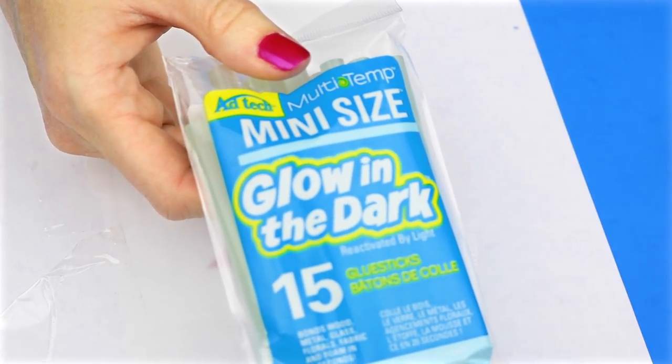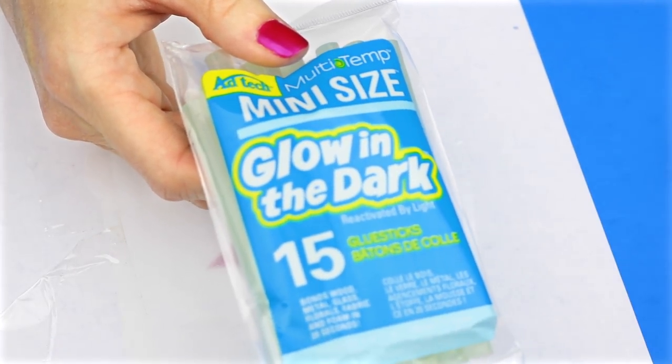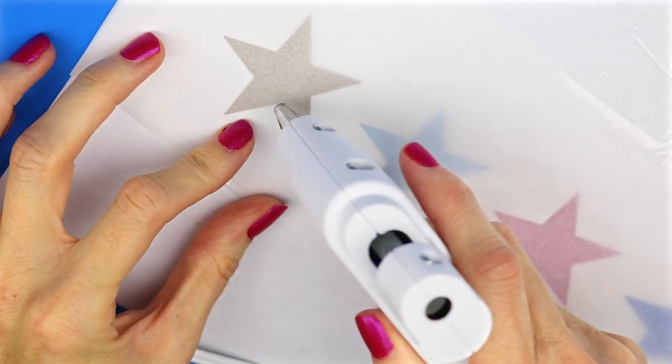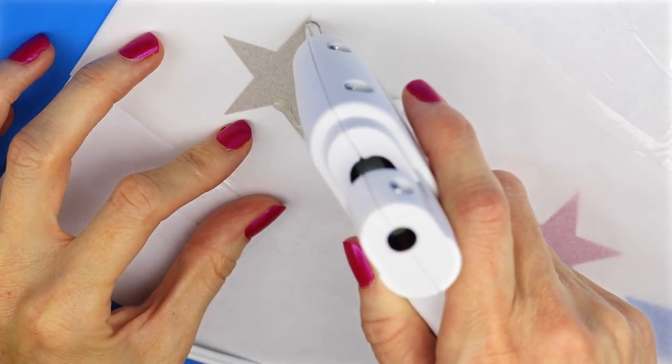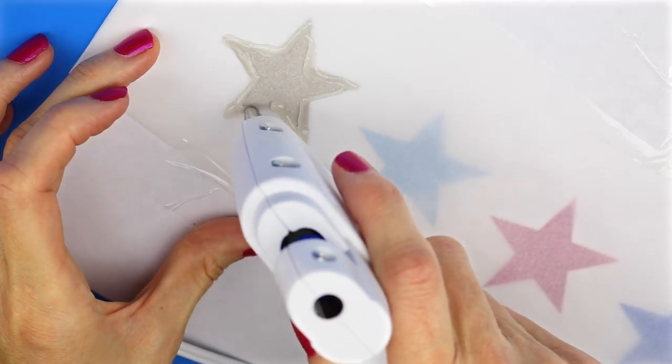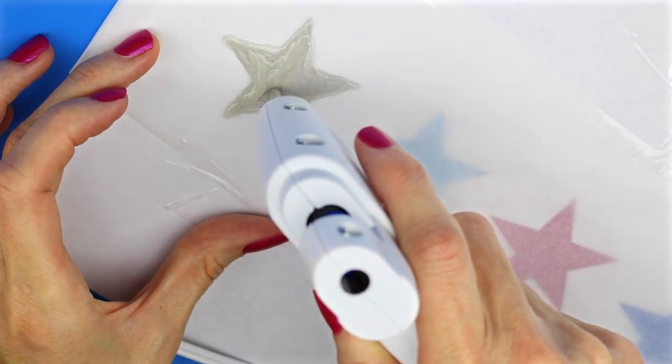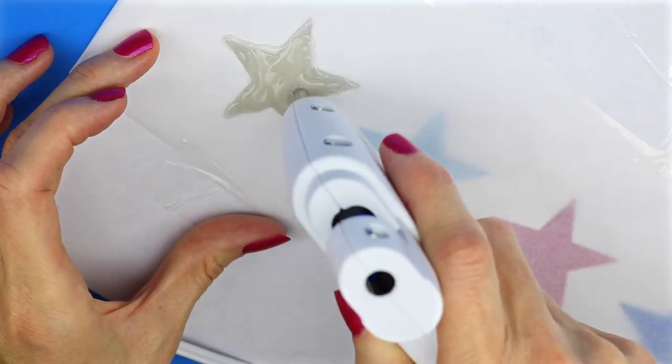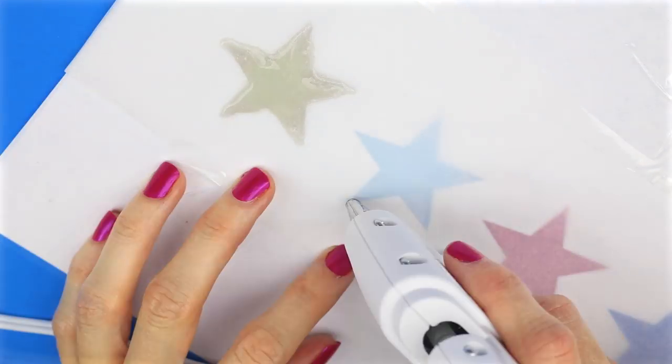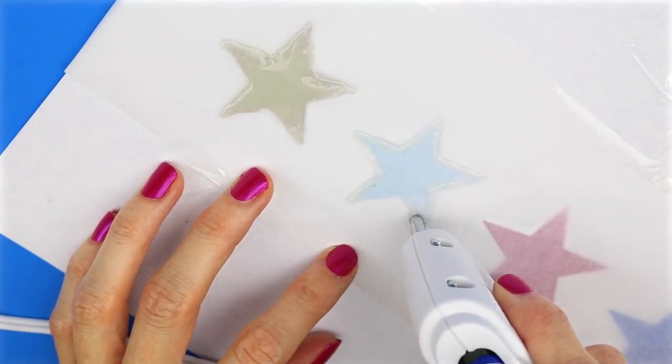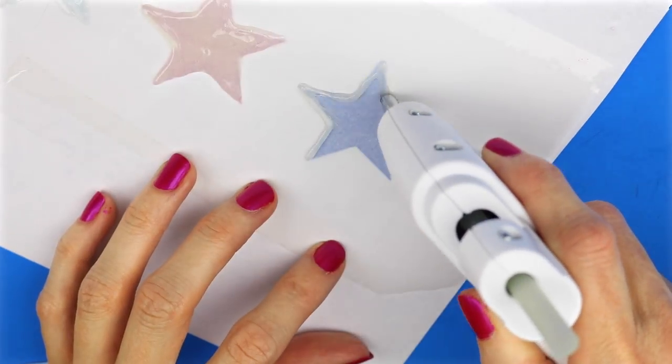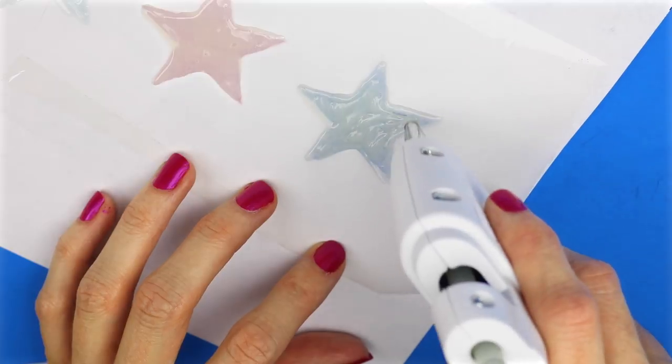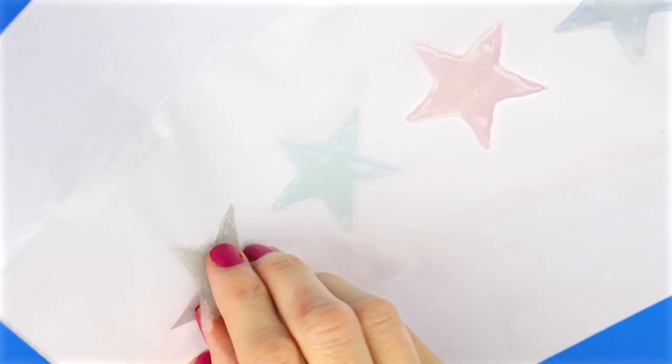I will be using these glow-in-the-dark glue sticks. I went over each of the stars with the glue gun that had the glow-in-the-dark glue sticks in it. Once they had cooled down, I removed them from the parchment paper.